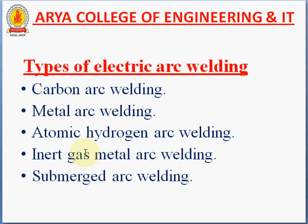Types of electrical arc welding are: carbon arc welding, metal arc welding, atomic hydrogen arc welding, inert gas metal arc welding, and submerged arc welding. In this video lecture, we will study two types: carbon arc welding and metal arc welding.